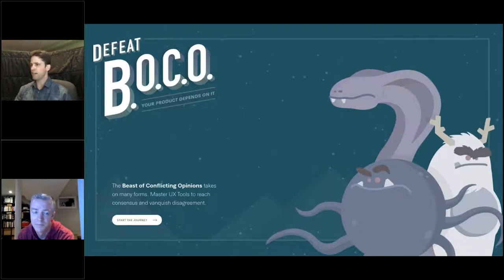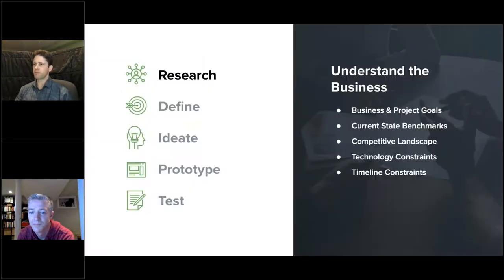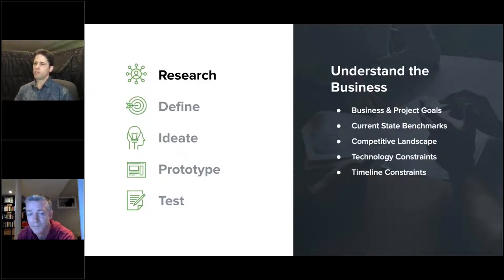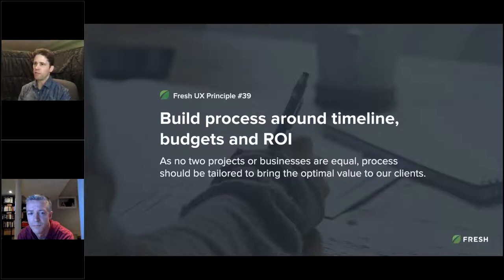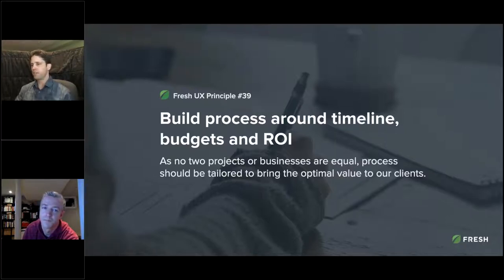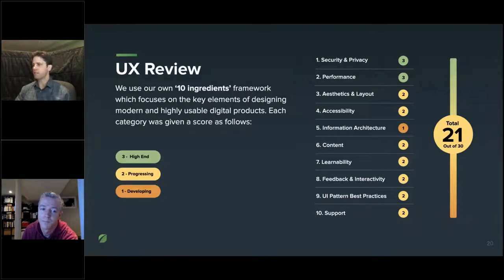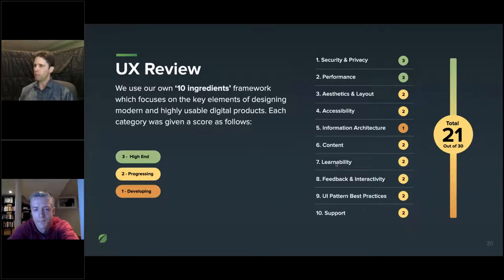We do have a website — we'll share the URL — it walks you through the story of the UX process. First, we want to understand business needs: what are the business and project goals, the current state, the competitive landscape, technology constraints, and timeline constraints? That brings me to our first Fresh UX principle: we build our process around the timeline, the budgets, and the ROI, crafting it to the client and the project as no two are really alike. One of those tools we use, especially with existing products, is a UX review where we look at the product in 10 different categories, give it a rating, which aligns teams on areas that really need improvement.